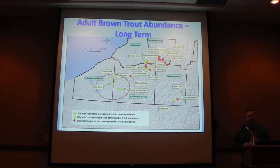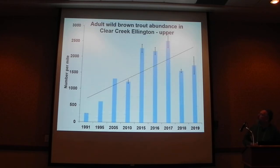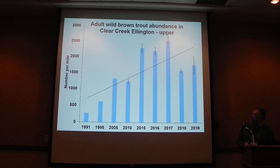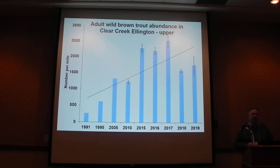In western Cattaraugus County and eastern Chautauqua County, most sites show long-term increasing trends — kind of good news for that part of the region. Here's an example: Clear Creek in Ellington. The y-axis is numbers per mile of adult trout. Over time we've had quite a nice overall increase in the adult brown trout population. In the shorter term, 2018 and 2019 were down a little, but the overall trend is increasing.